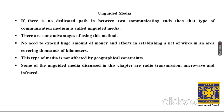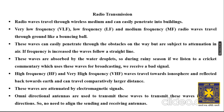Some of the unguided media discussed in this chapter are radio transmission, microwave, and infrared. Radio waves travel through a wireless medium and can easily penetrate into buildings. In older days, we used a transistor or radio set to listen to cricket commentary happening in another continent — that was possible using radio transmission.